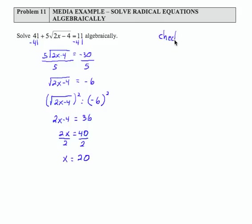we must check back in the original, check our result. So the result, 41 plus 5 times the square root of 2 times 20 minus 4.